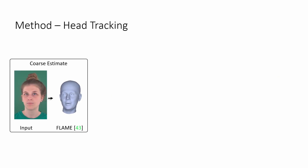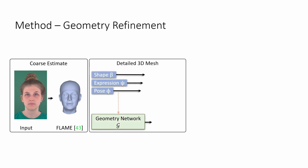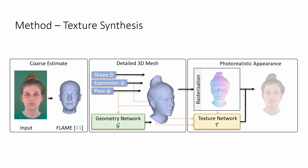we align it with the morphable 3D mesh named Flame, that gives disentangled control over shape, expressions, and poses of bald human heads. This coarse head estimate is refined by a novel geometry network G, which adds facial detail and hair structure. G is conditioned on the estimated joint poses to better reconstruct dynamic regions.